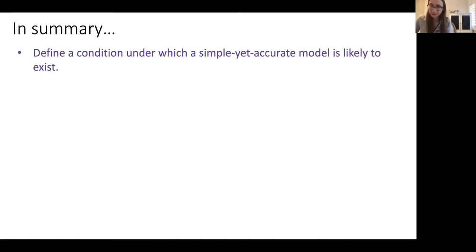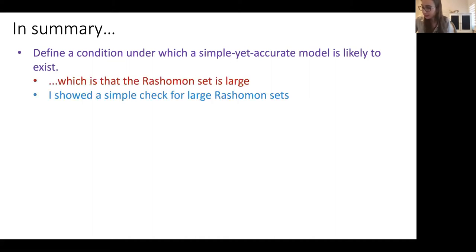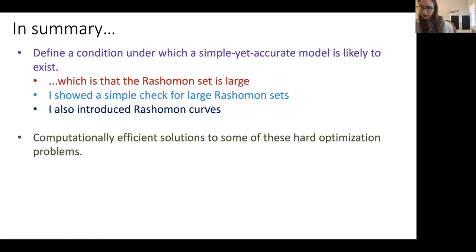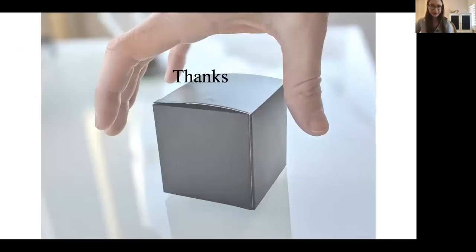In summary: I've defined a condition under which a simple yet accurate model is likely to exist — the Rashomon ratio is large, meaning there's a large number of good models. I showed a simple check for large Rashomon sets: run different machine learning methods that produce models of different complexity levels and check whether they all produce the same accuracy. I introduced Rashomon curves, which are characteristic curves present in every dataset we've experimented with. And I showed some of our work on optimal decision trees.